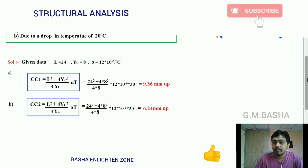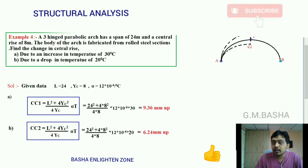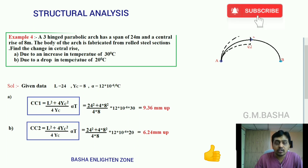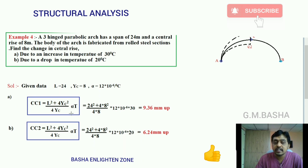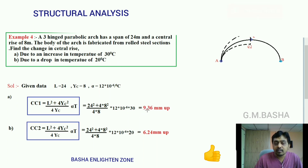For the increase in temperature, CC1, and for the drop, CC2, the formula is: (L² + 4yc²) / (4yc) × alpha × T. Substituting: L = 24m, yc = 8m, alpha = 12 × 10⁻⁶ per °C, and T = 30°C for the increase in temperature. The result is 9.36 mm upward.